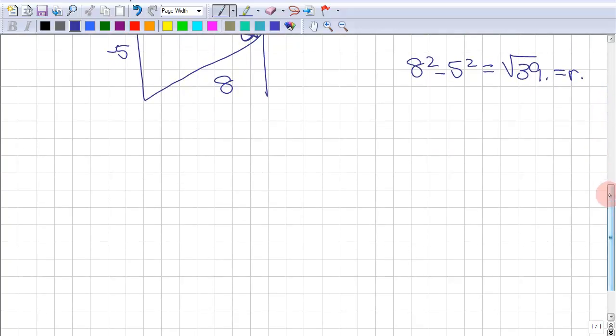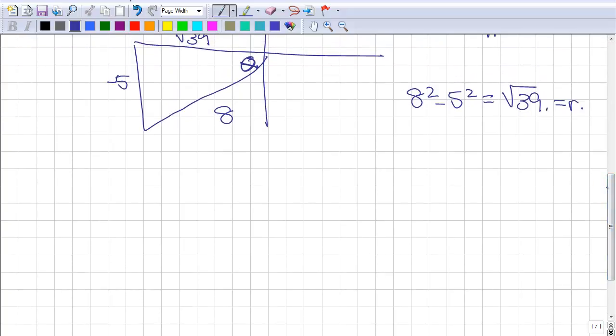So now to simply find all of the ratios accordingly, you plug in what you have. So cos theta will equal negative root 39 over 8. Tan theta will equal negative 5 over negative root 39.